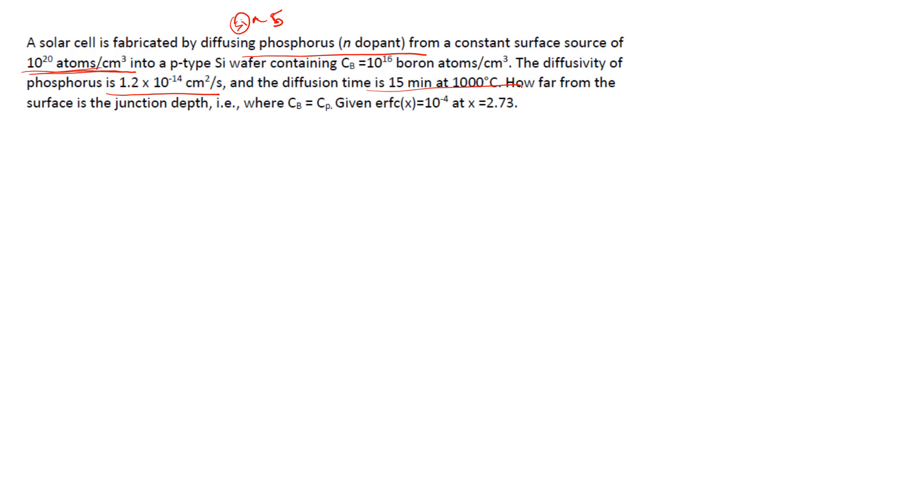The junction is where Cb equals Cp, means concentration of boron atom will be equal to concentration of phosphorus atom, and given erfc(x) = 10⁻⁴ at x = 2.73.